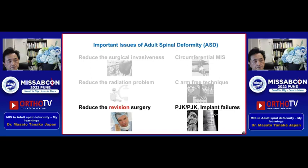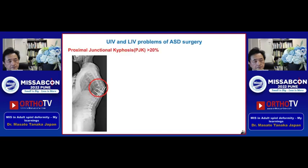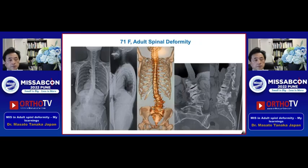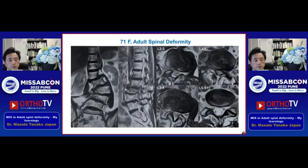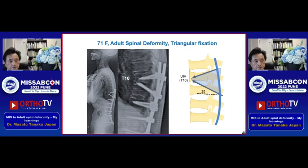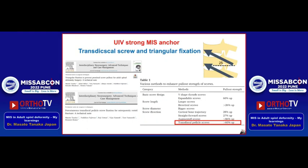The last topic is how to prevent revision surgery. As you know, PJK has been reported in more than 20% of ASD cases, and sometimes this kind of revision surgery is necessary. This is another case of ASD with MRI images. To prevent proximal screw back-out, we use a triangular fixation technique. The T11 screw is a trans-discal screw and the T10 screw is directed downward. The pull-out strength of the trans-discal screw is 1.6 times stronger than a normal screw.